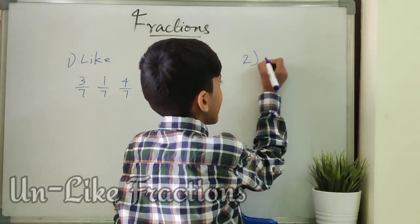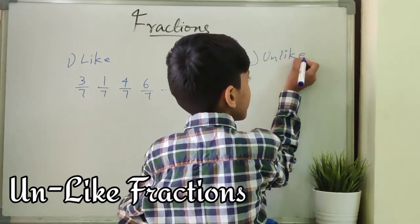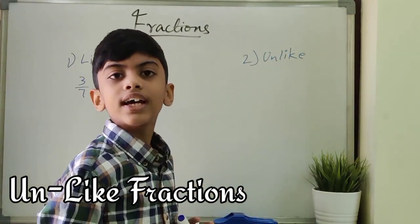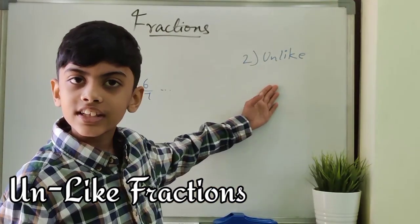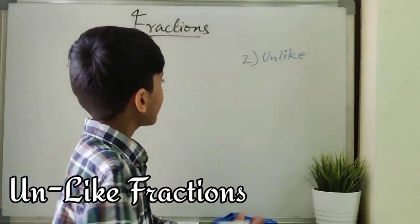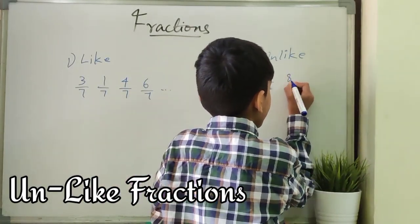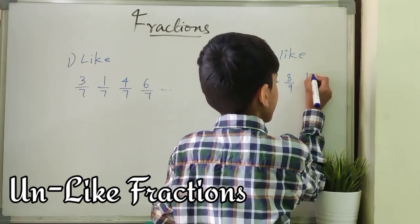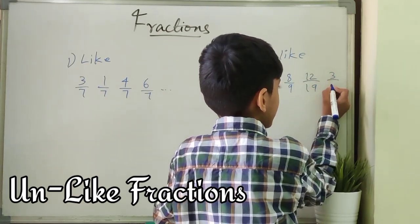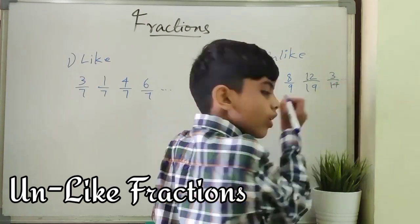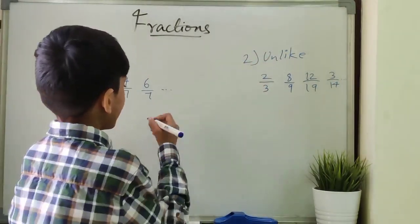Next, unlike fractions. Fractions with different denominators are called unlike fractions. For example, 2 by 3, 8 by 9, 12 by 19, 3 by 14 and so on are called unlike fractions.